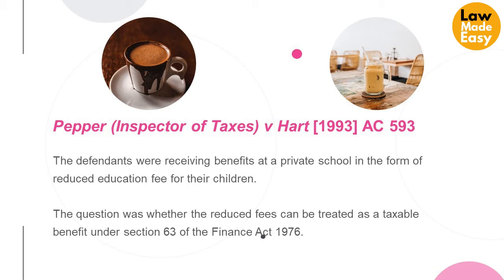Let's look at the case of Pepper, Inspector of Taxes against Hart, famously known as the Pepper versus Hart rule. This change of the court's position in relation to Hansard was finally settled in this case. The defendants were receiving benefits at a private school in the form of reduced education fees for their children. The tax inspector sought to tax those benefits in kind. The question was whether the reduced fees can be treated as a taxable benefit under Section 63 of the Finance Act 1976. Parliamentary debates had discussed the issue and the parties sought to rely upon Hansard.